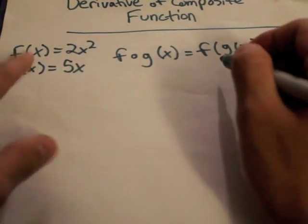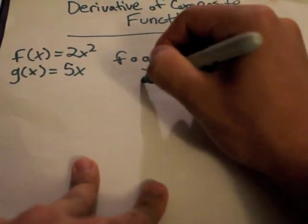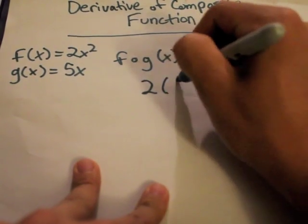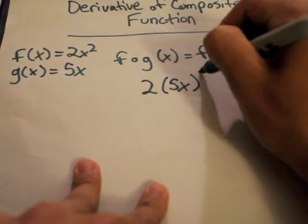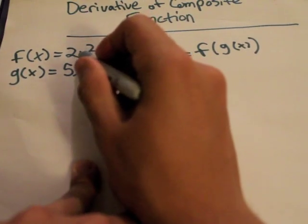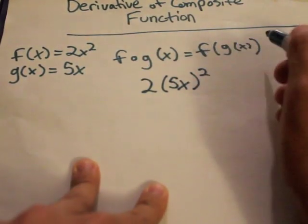So to rewrite this with the original equation, we would have 2 times 5x squared. And that's just plugging this 5x right where this x is, because you want the function of g of x.